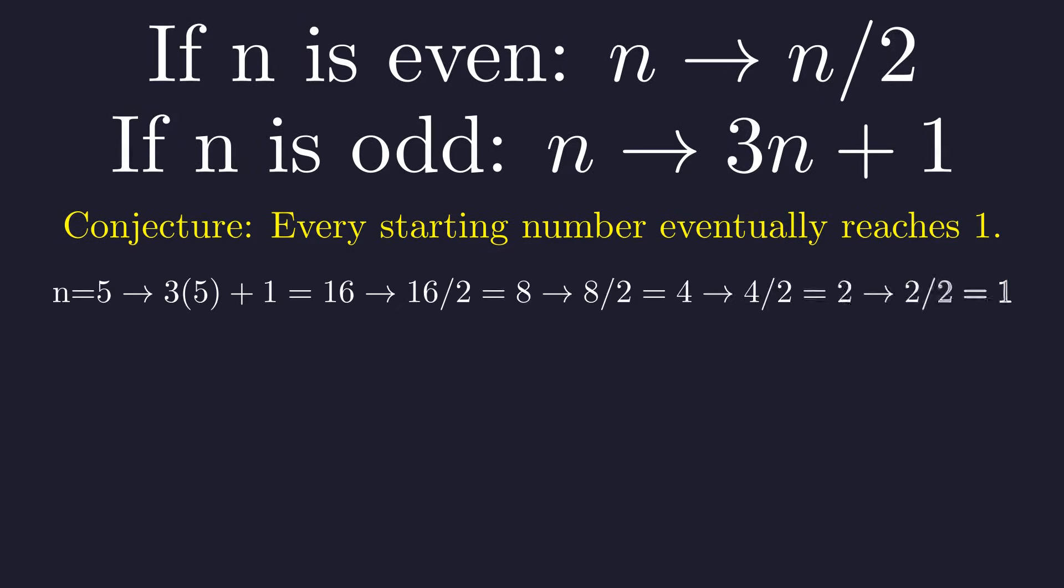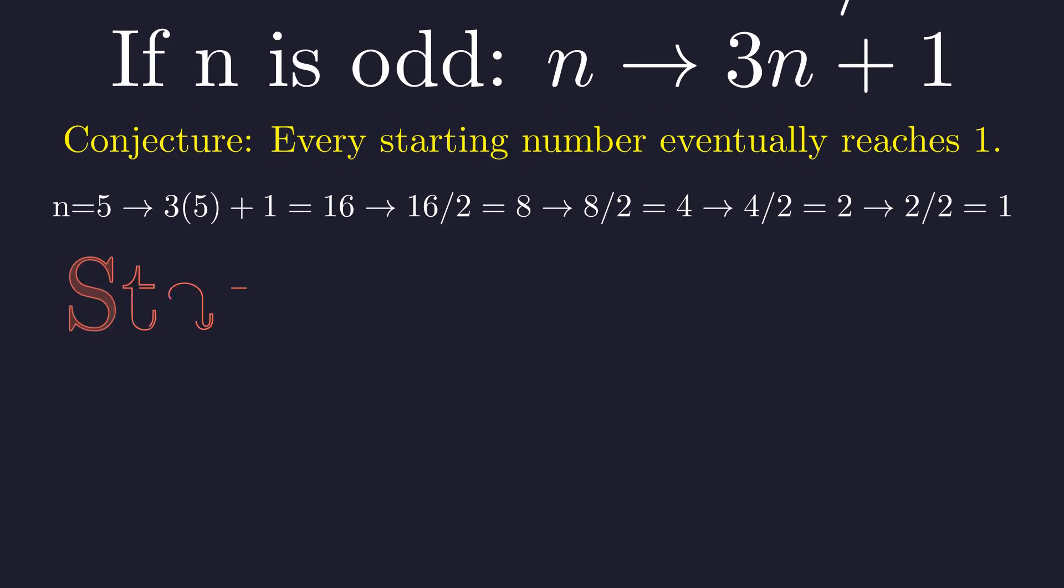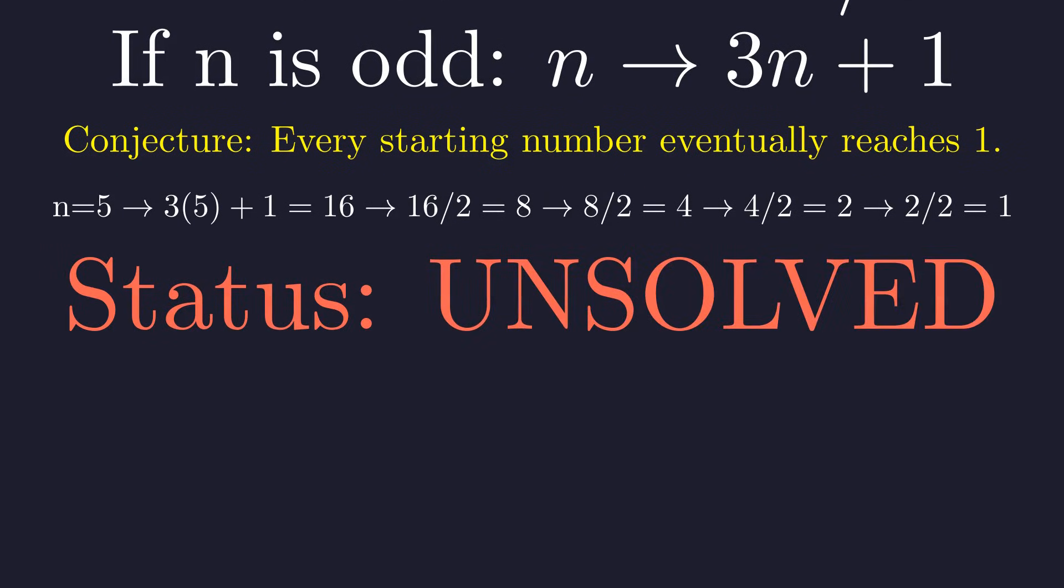Let's try five. Five is odd, so it goes to 16, then 8, 4, 2, and finally one. Despite being tested for quintillions of numbers, no one has proven that there isn't some large number that gets stuck in a loop or flies off to infinity. This simple problem remains completely unsolved.